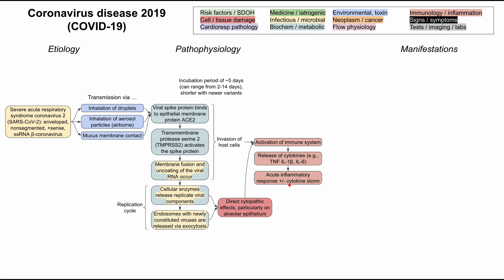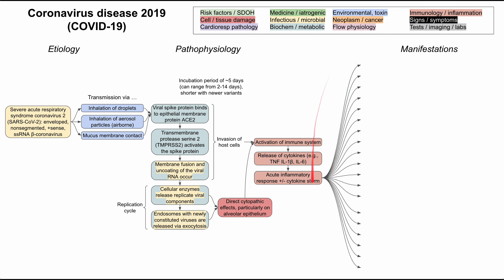This is where many of the manifestations will come from. The incubation period — from binding to ACE2 to having symptoms — usually lasts about five days, and can range from two to 14 days, a quite long range. Newer variants of COVID-19 have also decreased this incubation period.